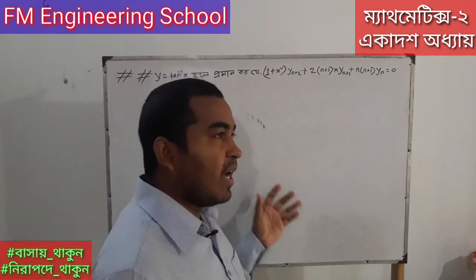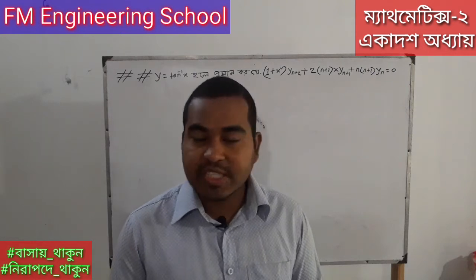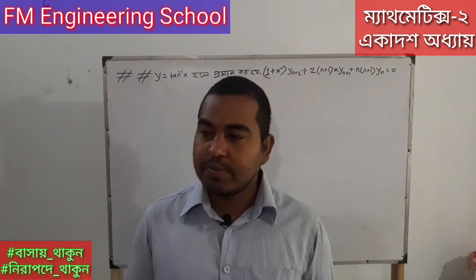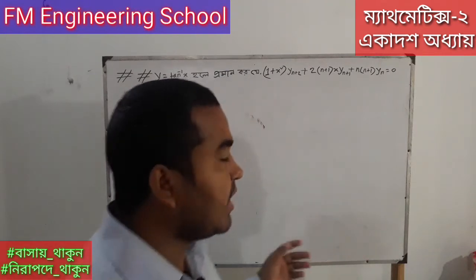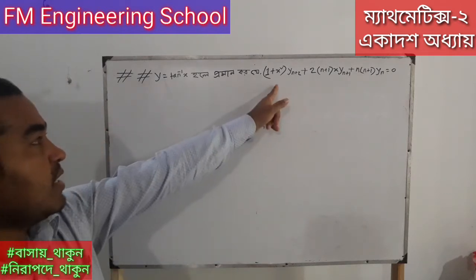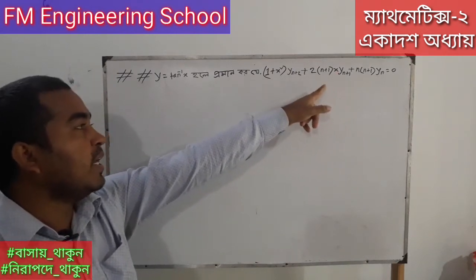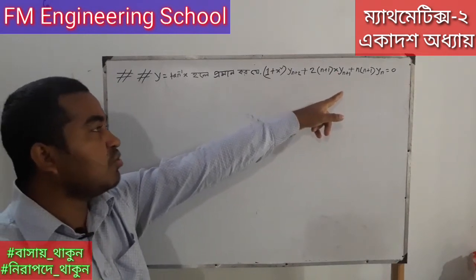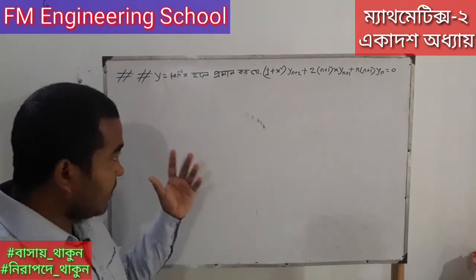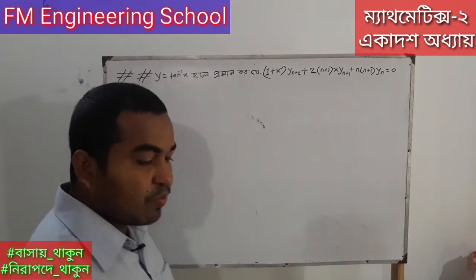We have seen these short problems before. The key idea is: E is equal to 10 inverse x, so we should be able to realize that (1 + x²) yₙ₊₂ plus 2(n+1)x yₙ₊₁ plus n(n+1) yₙ is equal to 0.